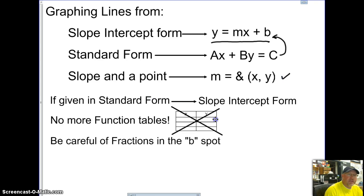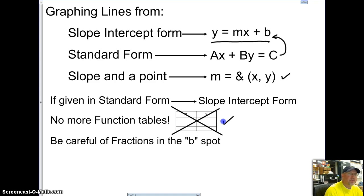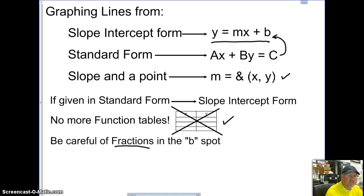The nice thing about this is we have no more function tables. We do not have to figure out what x or y is, or choose x and find y — so that's less work. We do have to be careful with fractions in the b-spot, as fractions are a little trickier to graph in this type of situation.